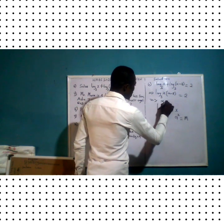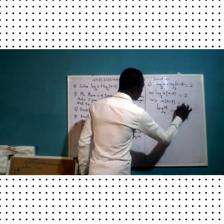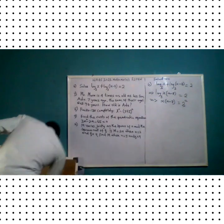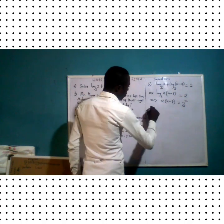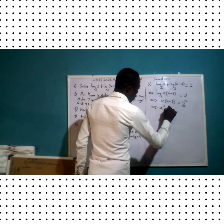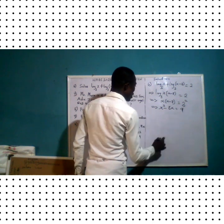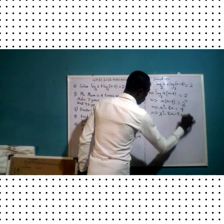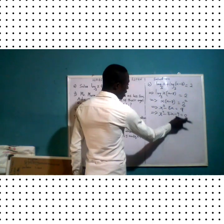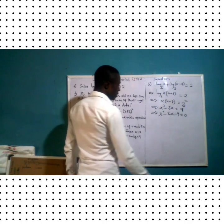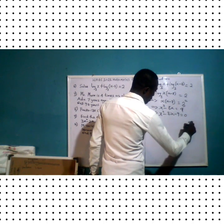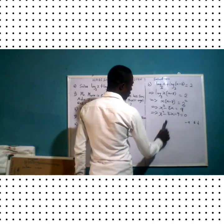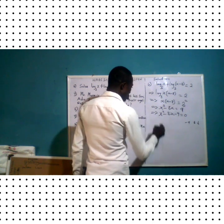This implies that x(x minus x) equals three raised to the power two, which is nine, by the definition of logarithm. Clearing the bracket gives x squared minus x equals nine. Rearranging into a quadratic equation set equal to zero, we look for factors of negative nine that add to give negative eight: that would be negative nine and positive one.